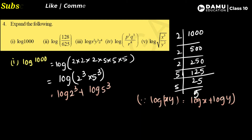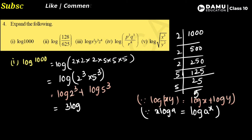One more formula: log(a^x) = x·log(a). Applying this, log(2³) + log(5³) becomes 3·log 2 + 3·log 5. So this is our answer.